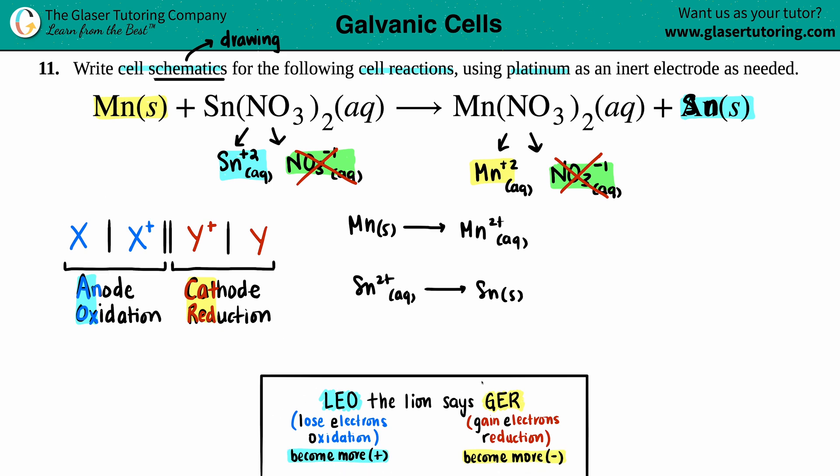Which one is oxidation and which one is reduction? Well, Leo the lion says GER tells us that LEO. If you're losing electrons, that's the oxidation side. And that's the side that always becomes more positive. On the flip side, the GER gain of electrons. You're always becoming more negative or less positive, whichever way you want to think about it. So now if I look at Mn, there's no charge in the upper right-hand corner. That means that you started off with a zero charge. So in essence, you went from a zero to a plus two. Did you become more positive or did you become more negative? Yeah. You became more positive and maybe I'll just say more positive. So this has to be oxidation.